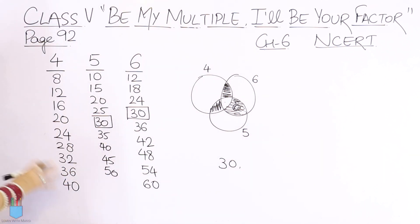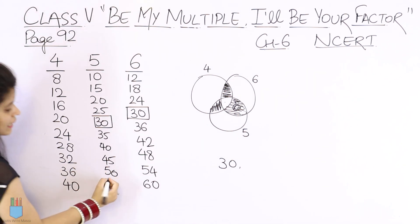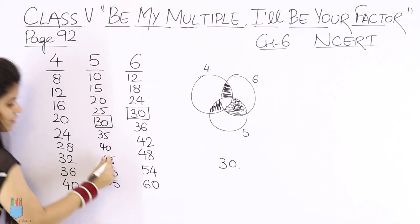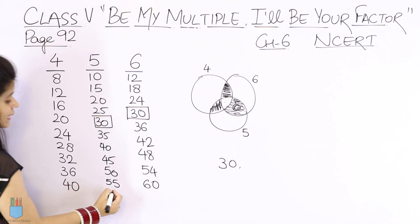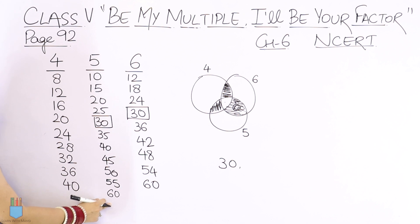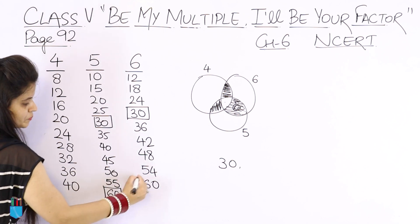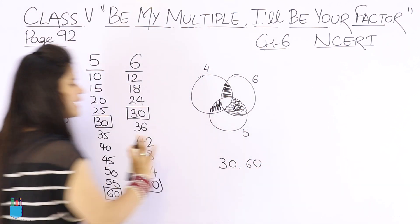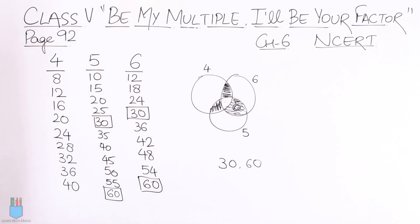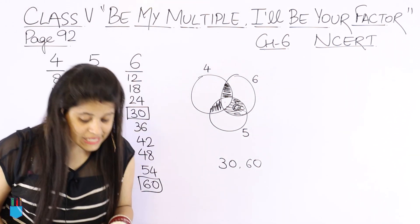We have only written 10 multiples each. If we extend, after 50 it will be 55 and then 60. So 60 is also common. That means we have one more common multiple. If you only write 30, there is no problem — because if you write 10 multiples, that is okay.